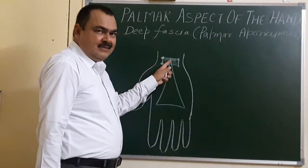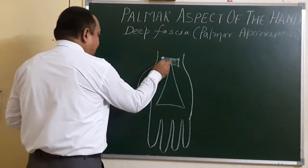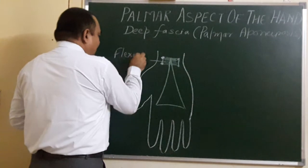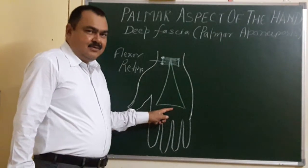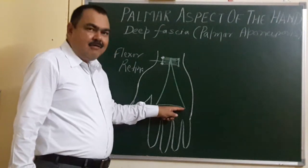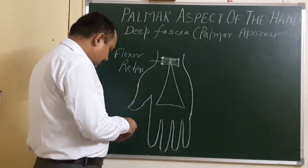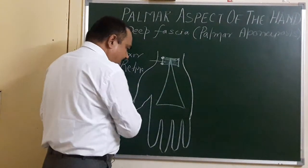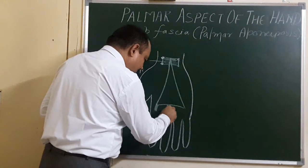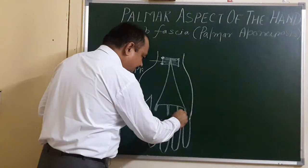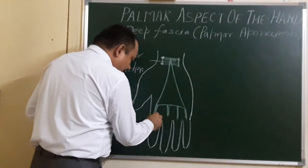It is triangular in shape. It has an apex which is attached with the flexor retinaculum. It has a base which extends at the level of the heads of the metacarpals — first, second, third, and fourth metacarpals. This base gives 4 slips.